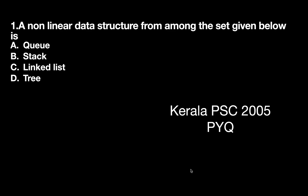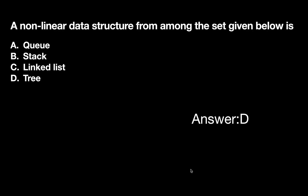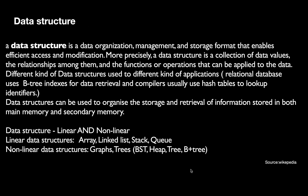Question number one: a nonlinear data structure from the given set is — option A: queue, option B: stack, option C: linked list, option D: tree. This is a very easy and simple question. The correct option is D, tree. Tree is a nonlinear data structure, while queue, stack, and linked list are linear data structures.